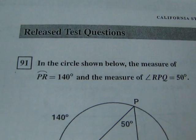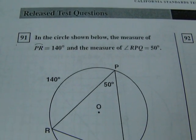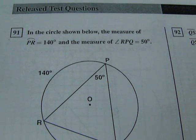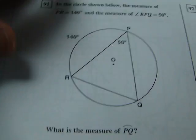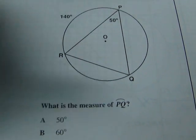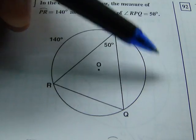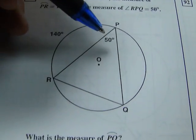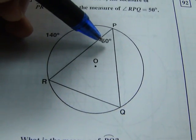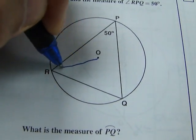Next is number 91. 91. It says, in the circle below, the measurement of arc PR is 140. And the measure of angle RPQ equals 50. Okay. And it's saying, what is the measure of the arc PQ? So, we want to find this one. All right. So, let's look at this. This is an inscribed angle. Does everybody see that? It's an inscribed angle. So, let's think about this. If that's inscribed, what about this one?